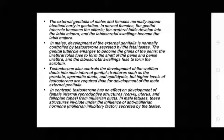These problems begin affecting the fetus by 8–10 weeks of gestation, leading to abnormal genital development in females. In normal females, the external genitalia initially appear male-like. The genital tubercle becomes the clitoris, the two urethral folds develop into the labia minora, and the labioscrotal swellings become the labia majora. In males, development of external genitalia is normally controlled by testosterone secreted by the fetal testes; the genital tubercle enlarges to become the glans penis.